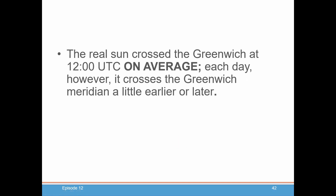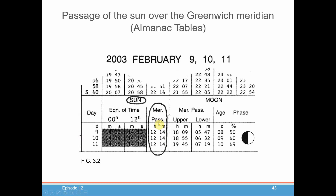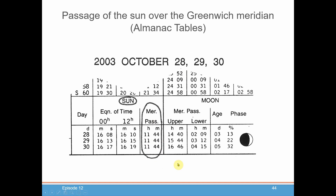The real sun crosses Greenwich on average at 12 o'clock UTC but it will cross the Greenwich meridian a little earlier or a little later. In your almanac, if you look at a particular day, it actually tells you when the sun crossed the Greenwich meridian on that day, and that's the time you compare to your meridian crossing time to get your longitude. For example, in October it crosses the meridian before 12 o'clock, so it's important to keep track of this when using meridian passage to determine longitude.